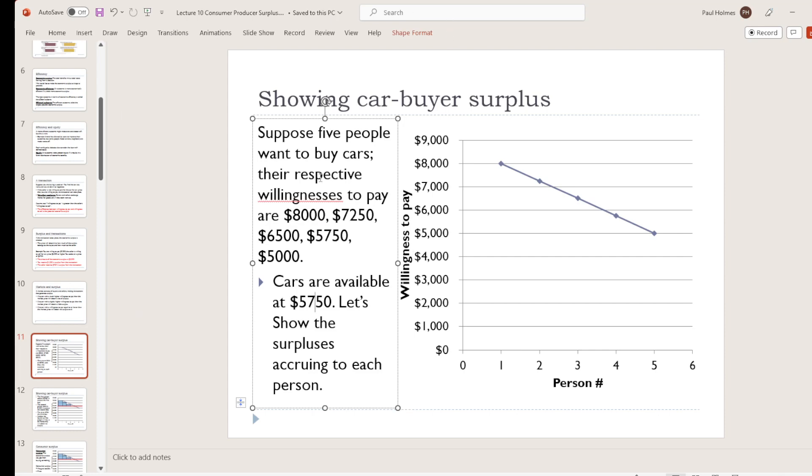So we've got all of these identical used cars available. They're all priced at $5,750. We've got five people who are interested in buying a car. Those are their respective willingness to pay. One person's willing to pay $8,000, one's willing to pay $7,250, and so on.